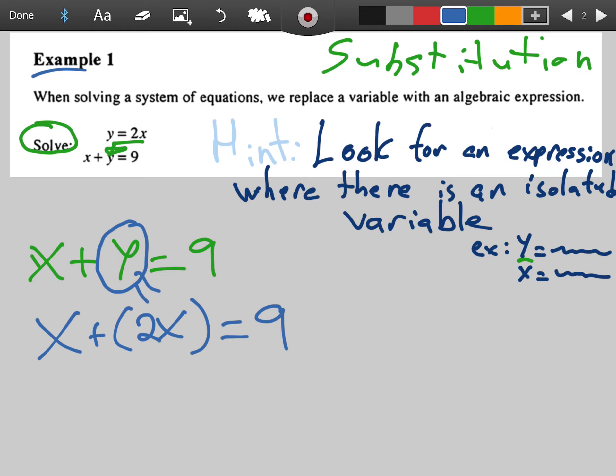Does that make sense? So notice, instead of y, I wrote equals 2x. And now from here, I'm going to take this further and solve. So x plus 2x. I know that these are like terms, so we can rewrite that as 3x equals 9. Can we solve this further? Yes, we can. If we divide both sides by 3, this is going to claim that x equals 9 over 3. So collectively, x equals 3.